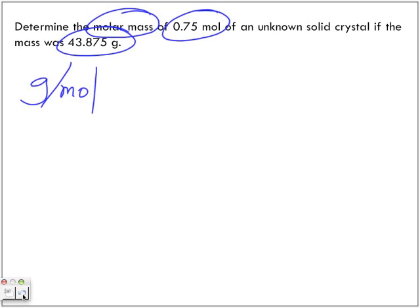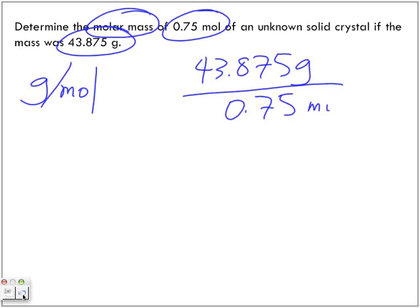So all we're doing is we're taking the mass, 43.875 grams, and we're dividing it by 0.75 moles. And what do we get? By the time I type something out, I've got to do the calculation here on my own.